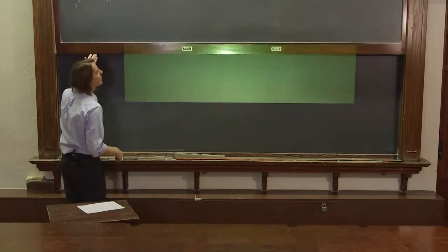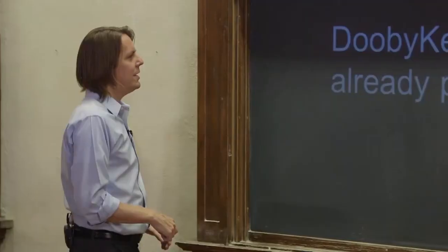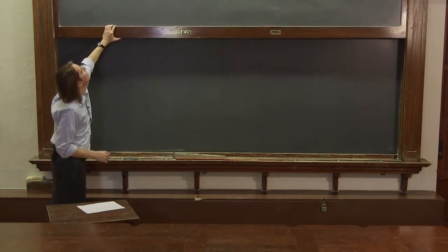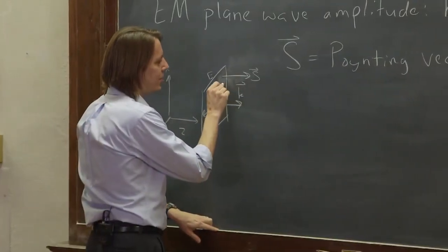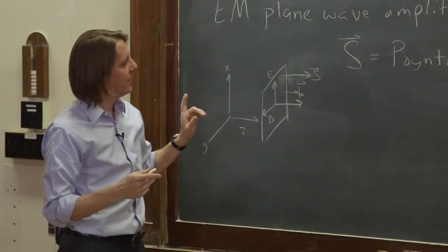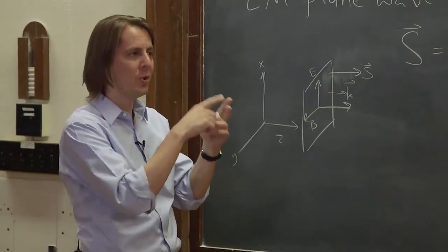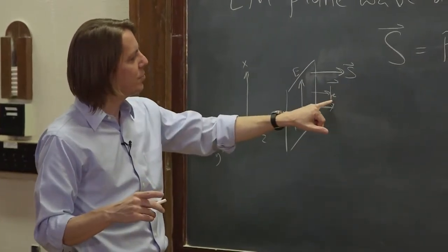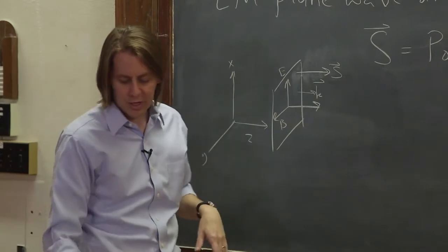We have a question here from Duby Keebler: why not just use K, since it already points in the right direction? Keebler is asking if we already have the K vector, why do we need another one? The directions are the same, but the amplitudes tell you different things. The K vector tells you basically the frequency — K is 2π over the wavelength, and omega equals cK. So K tells you the frequency, but S is going to tell us something new: it's going to turn our electric and magnetic field amplitudes into energy.